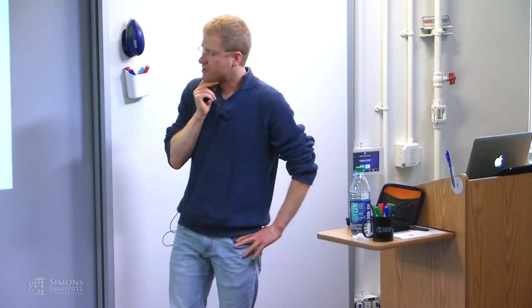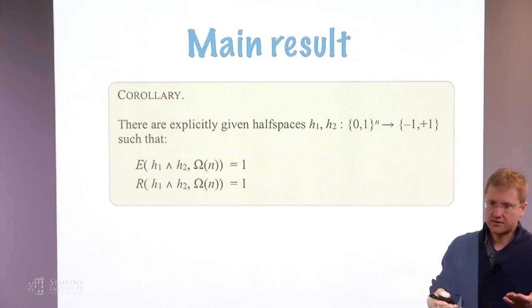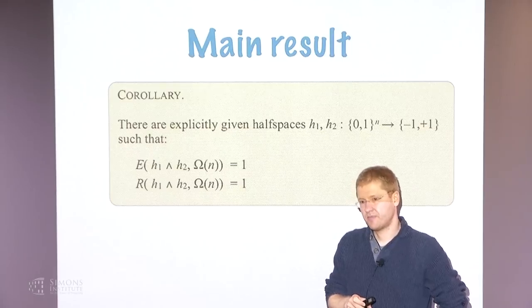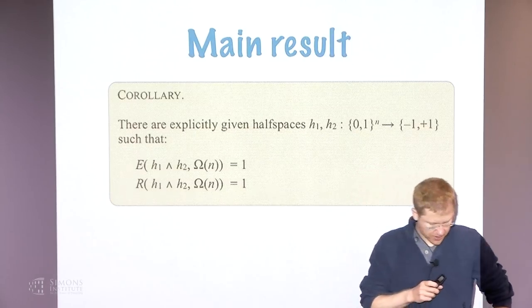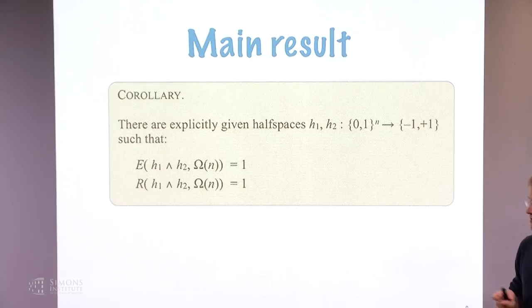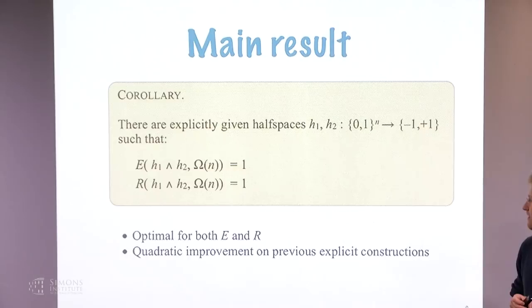As a corollary, we construct an intersection of two half spaces that cannot be approximated to any error better than the trivial error of 1, unless you allow approximants of degree linear in n. Put another way, this intersection of two half spaces cannot be represented by the sign of a polynomial of degree less than some constant times n. These are again a quadratic improvement on previous explicit constructions.